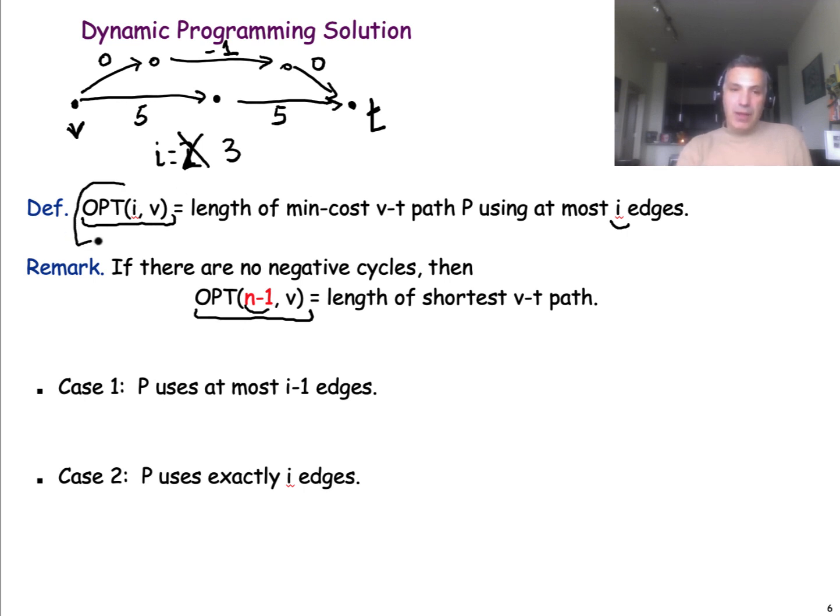All right. So, now that we have a good definition of the subproblems, let's see how we can structure our recurrence equation that will express the solution of each subproblem as a solution of smaller subproblems. Our base case is that if we have only zero edges, then, of course, the cost to get to the target is infinite. And, on the other hand, the cost to go from the node T, which is the target to the target, is zero, and that is basically for any number of edges.